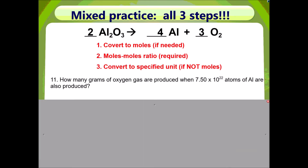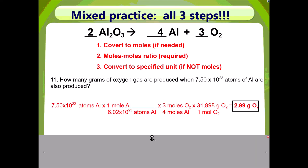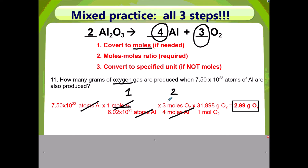Problem 11: how many grams of oxygen gas are produced when 7.50×10²² atoms of aluminum are also produced? You are starting with atoms of aluminum — you do need moles, so you need to get rid of atoms of aluminum and get to moles of aluminum in Step 1. Step 2, moles-to-moles ratio: get rid of moles of aluminum and get to moles of oxygen on top. The coefficients from the balanced equation go into Step 2. The question asks how many grams of oxygen gas, therefore you need Step 3 — get rid of moles of oxygen on the bottom and get to grams of oxygen on top. 31.998 is the molar mass of O₂. Your final answer is 2.99 grams of oxygen, which has three sig figs.